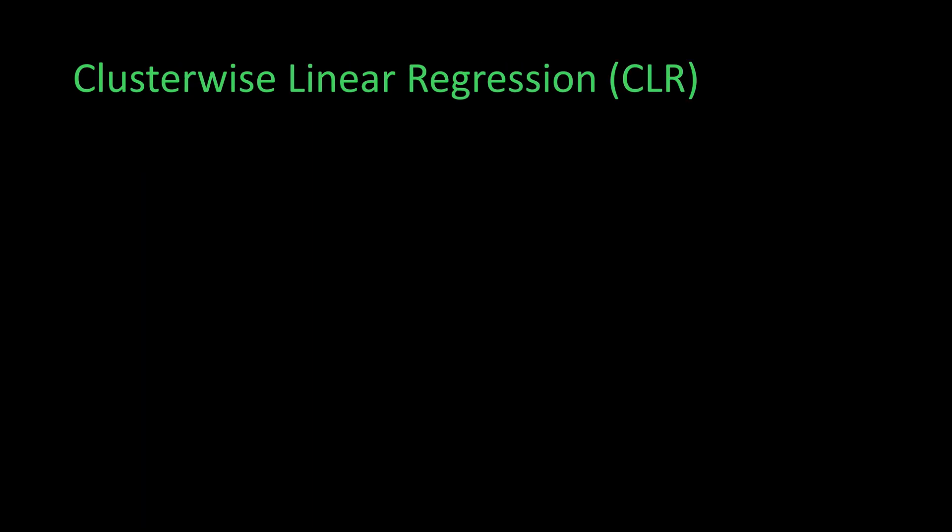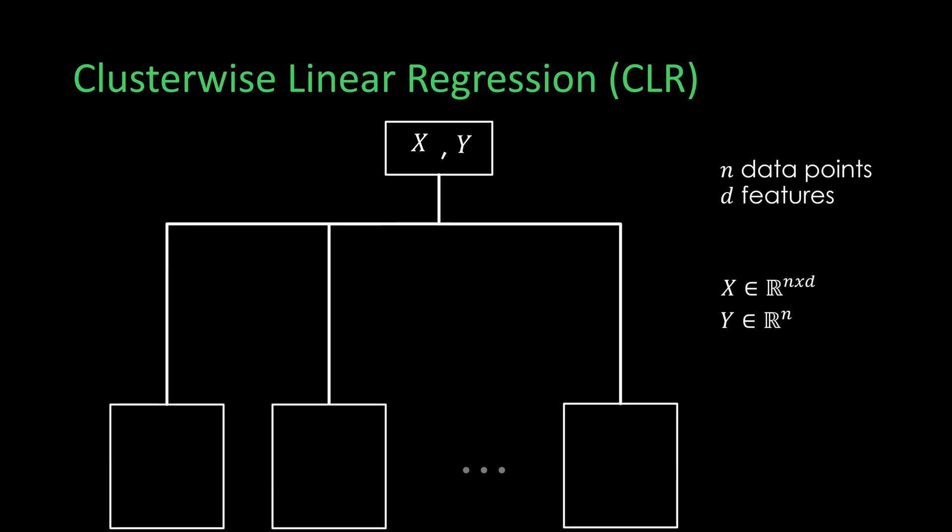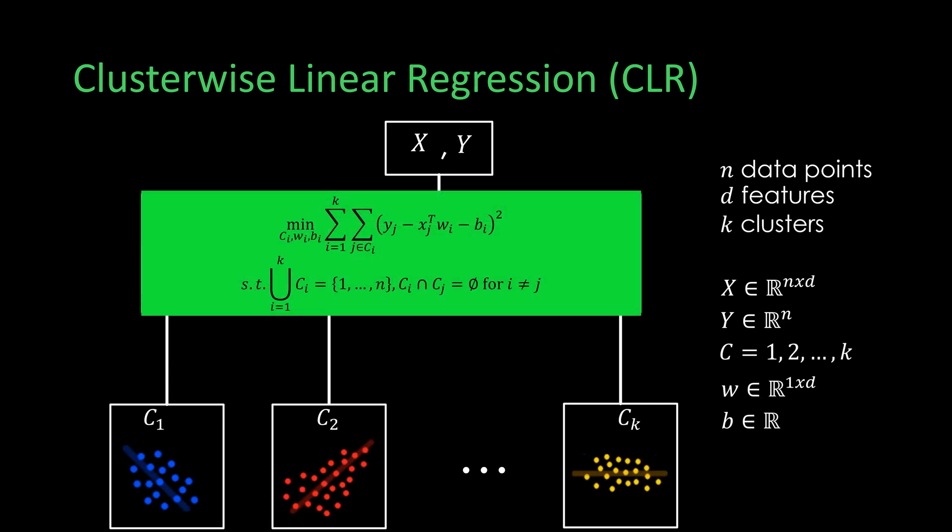Assume we have a dataset x with n data points and d features where the labels y are known. We attempt to partition the data into k clusters such that the overall mean square error of all regressors is minimized. In fact, identifying such patterns and relationships would also be useful for prediction purposes.